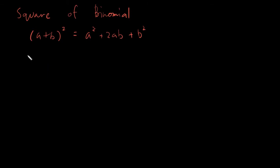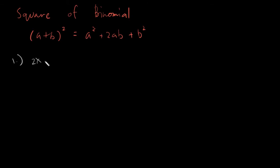Basically the square of binomial will have this structure. Let's have an example so that we can further see how this square of binomial goes. Let's have our first example: say we have (2x + y) squared.